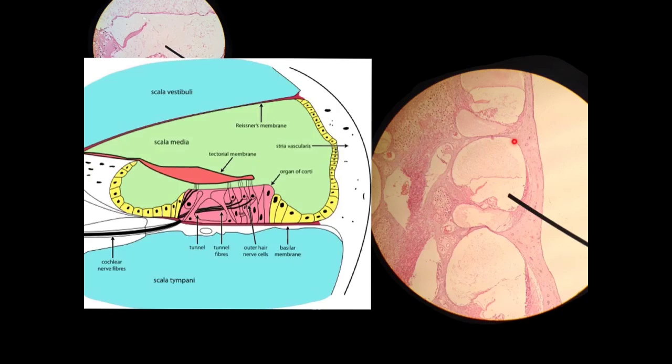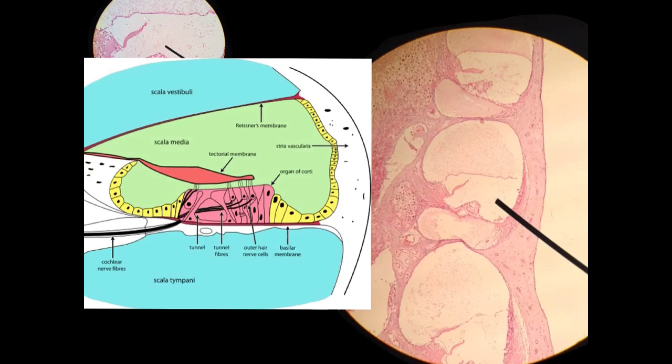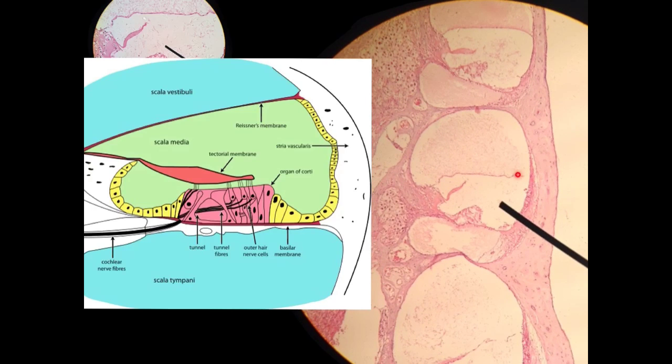You have this scala vestibuli up here, and the scala tympani down here. And one of the features I like to focus on the most is this thin membrane running across the top here, and also in this one up here. And that is the vestibular membrane, or also known as the Reisner's membrane, as you can see here. And that vestibular membrane is very, very thin, so it's easy to pick out actually with your eye. It's this one very thin line running across just above what is the organ of Corti down here.